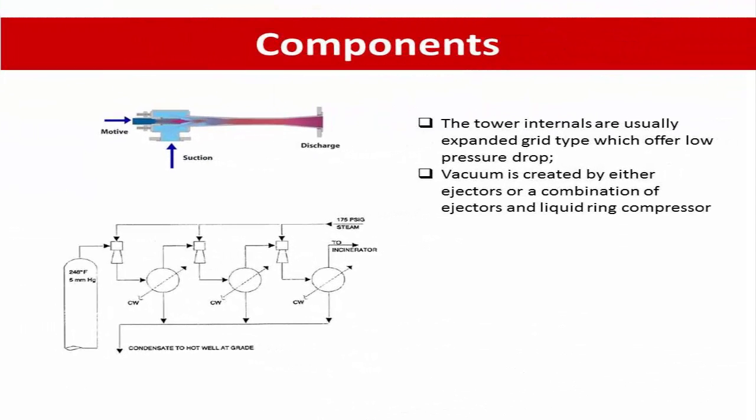The components. The Vacuum distillation column are equipped with packing for fractionation and heat exchanger zone. This is in order to reduce the pressure drop in the column which is necessary for creating a low vacuum in the lower section of the column. The towers internal are usually expanded grid types which offer a low pressure drop such that the flash zone pressure is about 25-40 mmHg absolute is maintained at the top of the column,